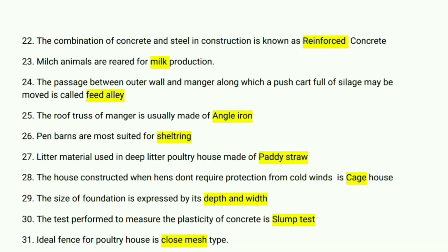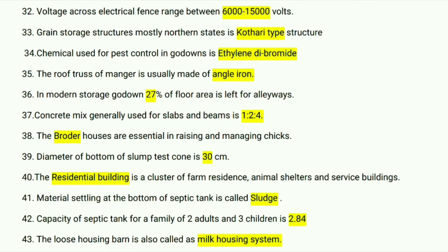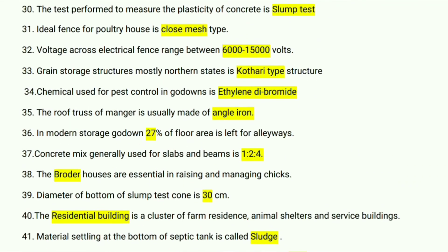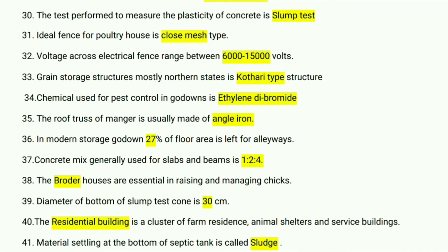The test performed to measure the plasticity of concrete is the slump test. The ideal fence for a poultry house is close mesh type. Voltage across an electrical fence ranges between 6,000 to 15,000 volts. Grain storage structures used mostly in northern states are of Kothari type.